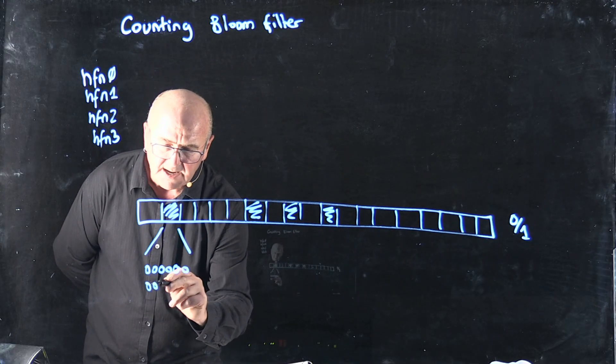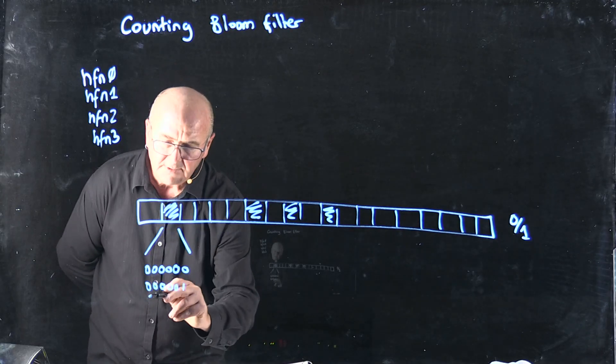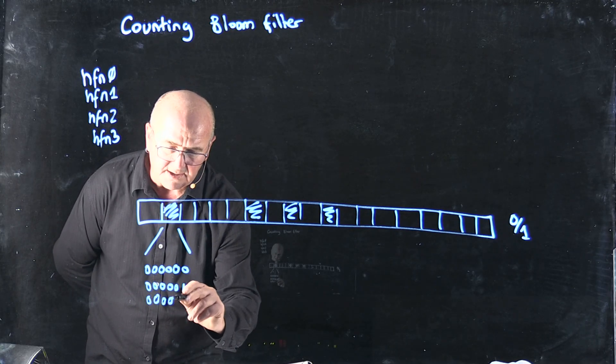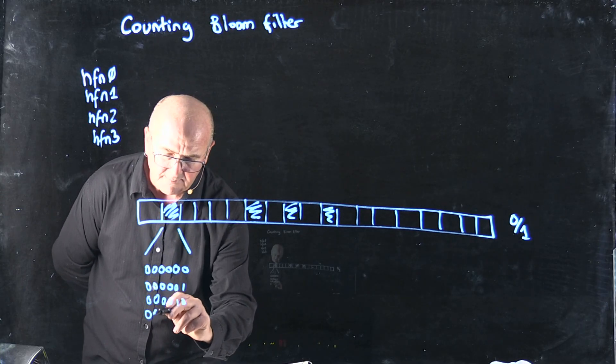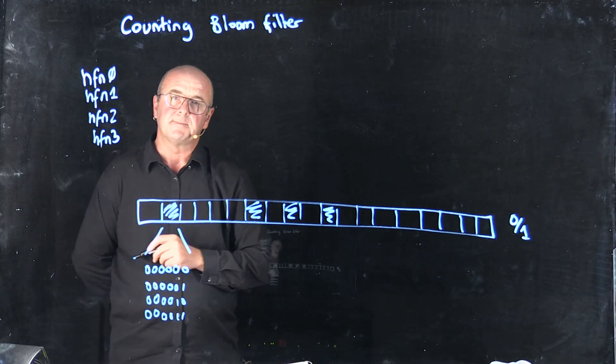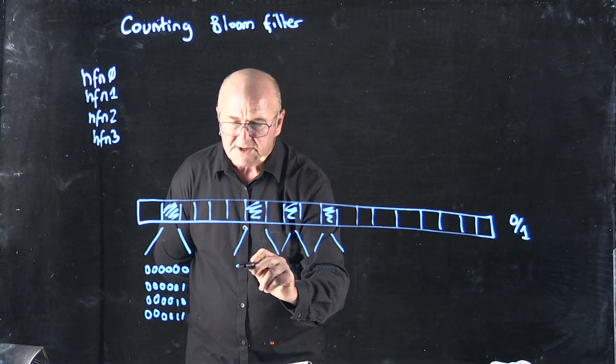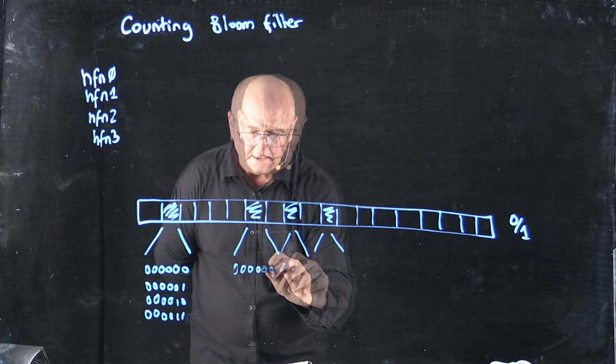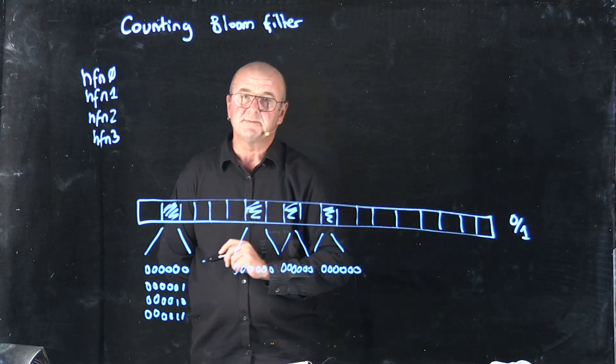As we add things to the bloom filter we can actually just start counting. And so we know how many things have been in our bins. And we do that at each of the locations and we just keep track of the counts in each bucket.